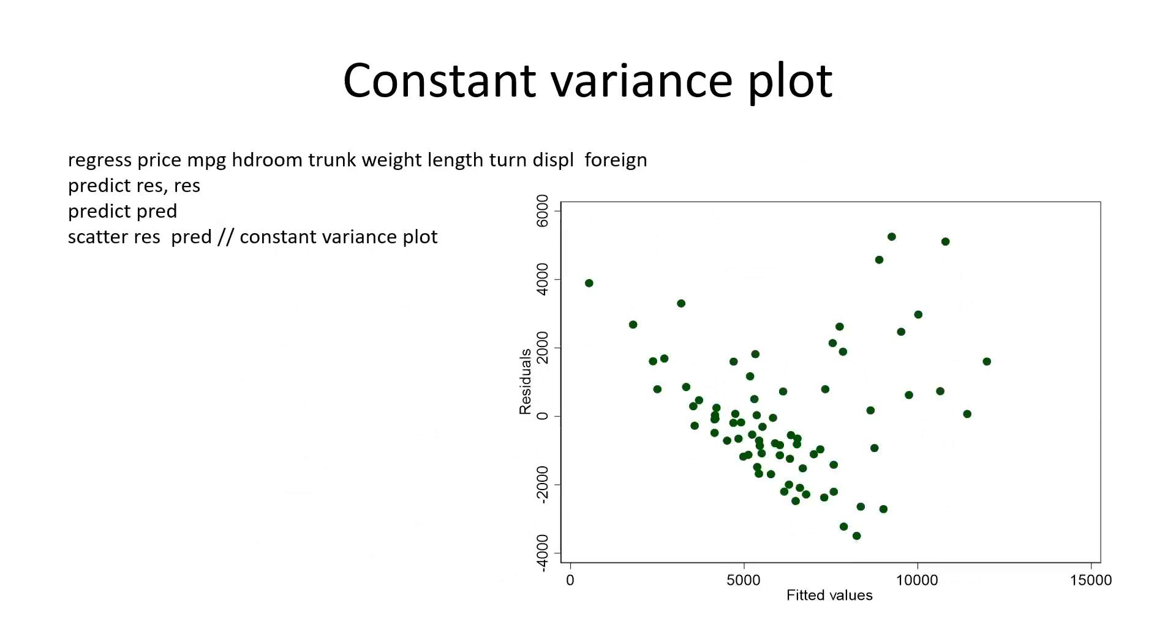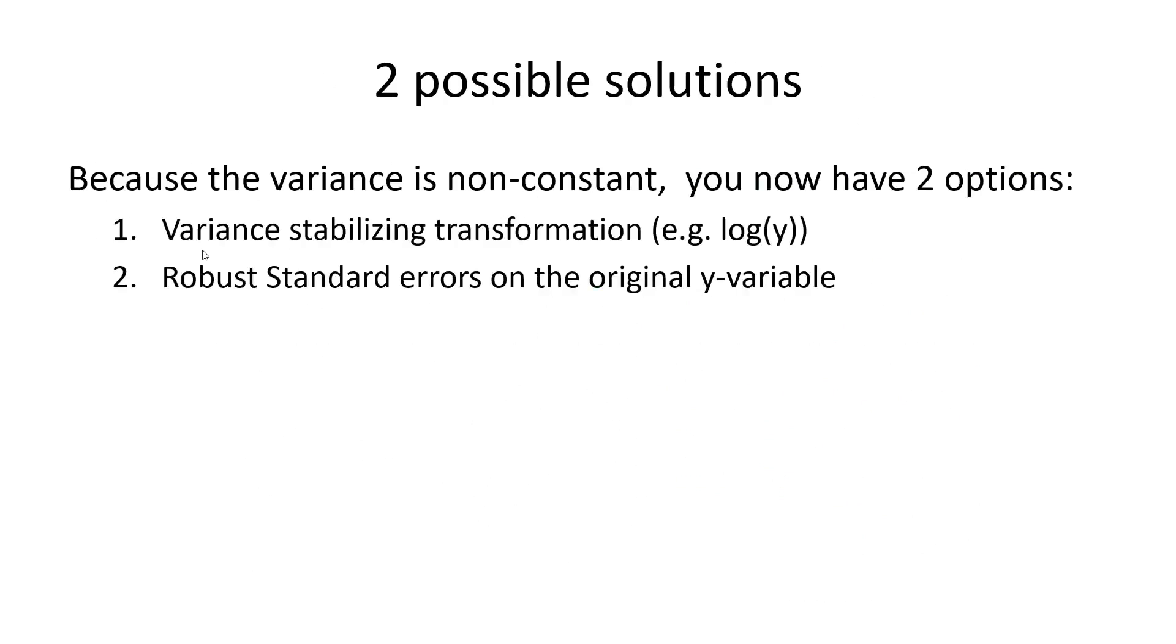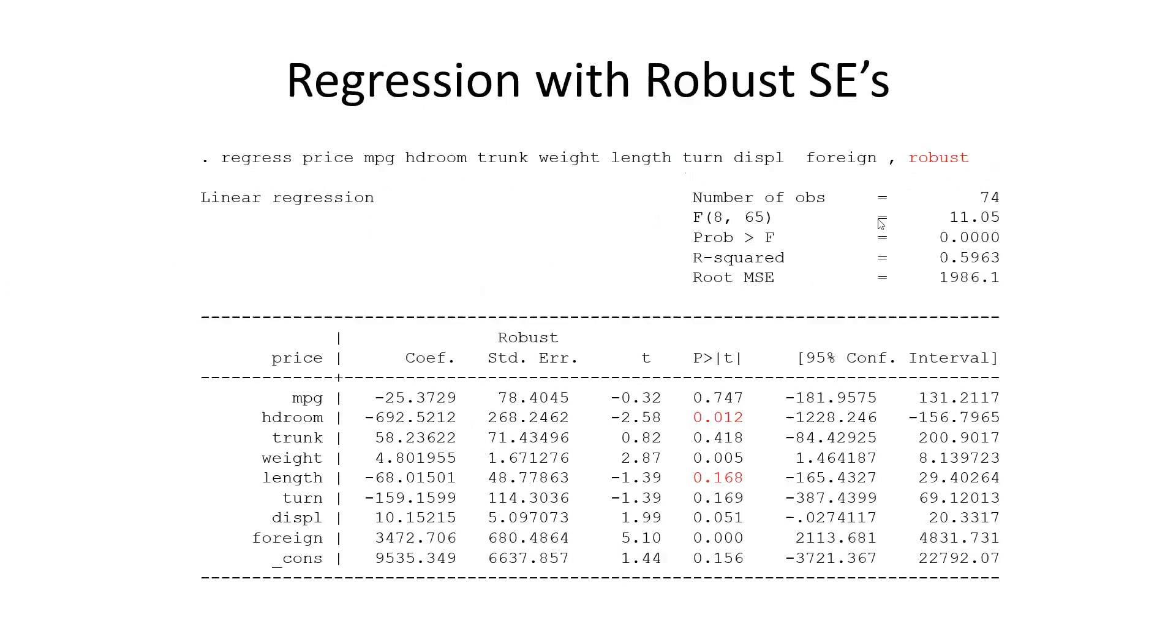So what do we do? We have two options: variance stabilizing transformation, for example log, or robust standard errors on the original Y variable. Let's start with robust standard errors because it's easy. We just specify robust.